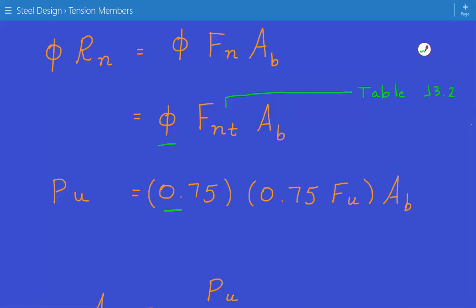This is a limit state of tensile rupture, so the resistance factor in LRFD is equal to 0.75. The design tensile strength is equal to phi times FnT times Ab. To clarify, the resistance factor is 0.75, and FnT, if we go to table J3-2 rows 6 and 7, the nominal tensile stress FnT is equal to 0.75 times the ultimate strength Fu. This covers the threaded parts multiplied by Ab.